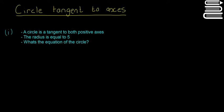In this video we're going to look at a few examples of circles being tangents to the axes and the problems we can solve with them. A circle is tangent to both positive axes, the radius of the circle is equal to 5, and it's asking us for the equation of the circle.